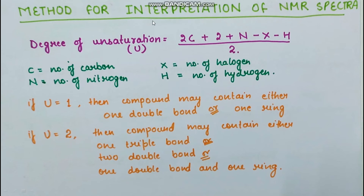For interpreting NMR spectra, first calculate the degree of unsaturation using the formula: U = (2C + 2 + N − X − H) / 2, where C is number of carbons, N is number of nitrogens, X is number of halogens, and H is number of hydrogens. If U = 1, the compound may contain either one double bond or one ring. If U = 2, possibilities include one triple bond, two double bonds, or one double bond plus one ring.